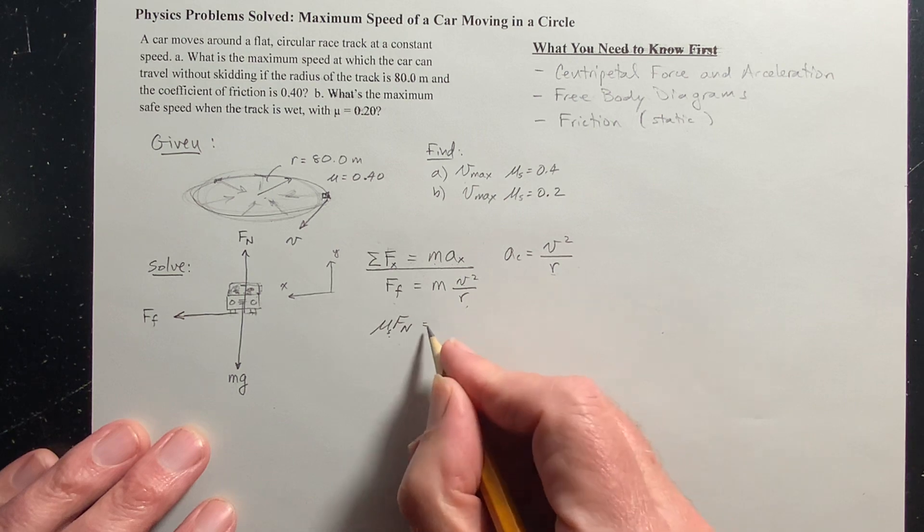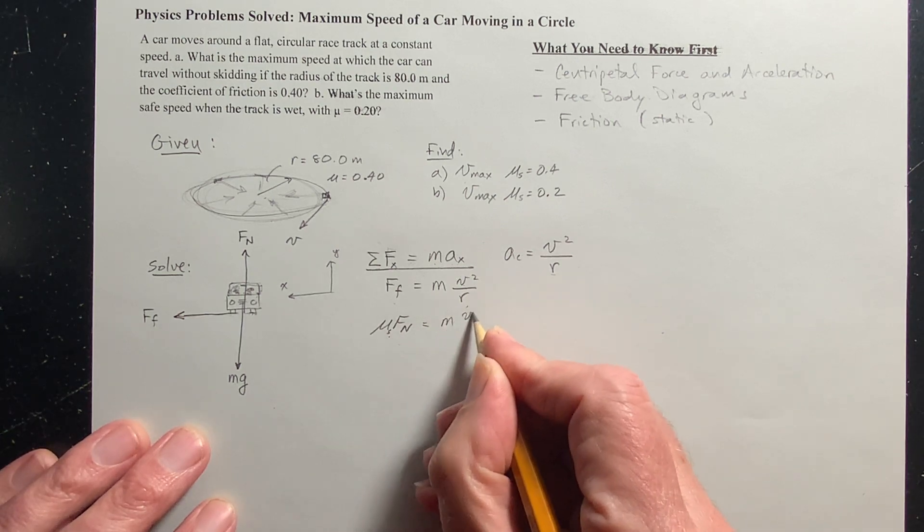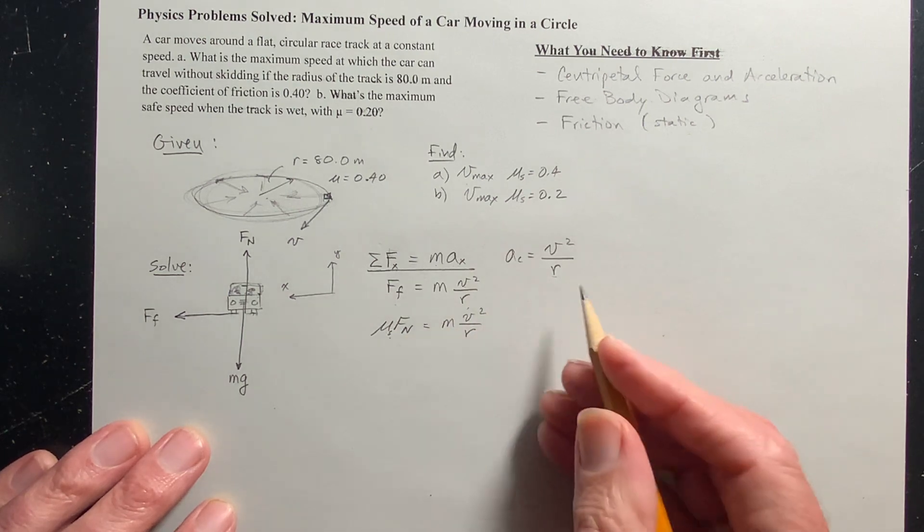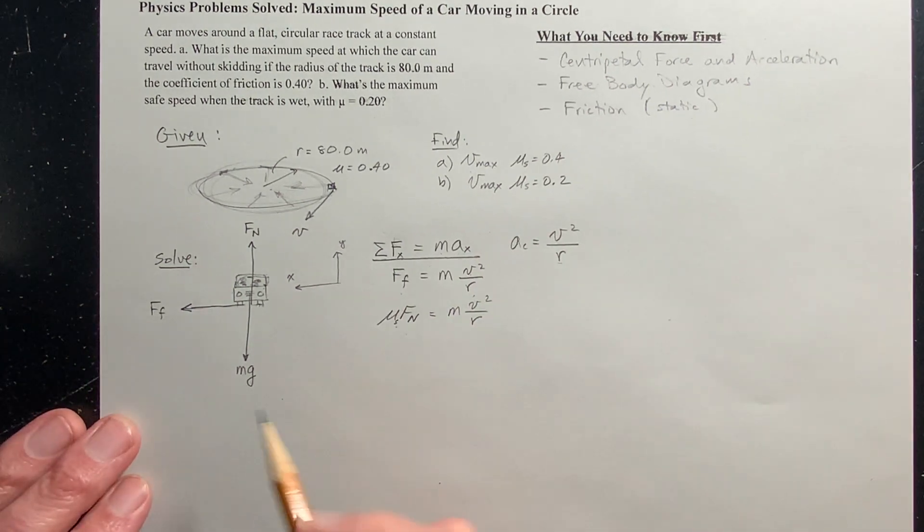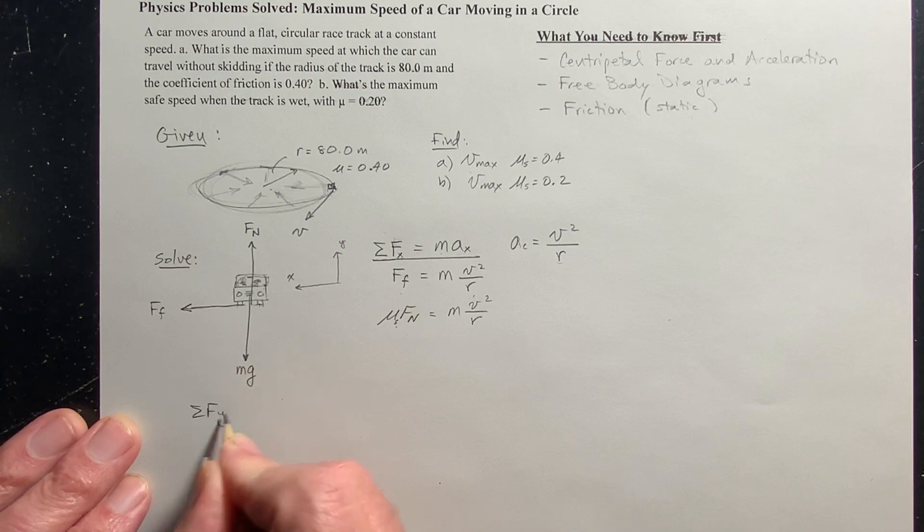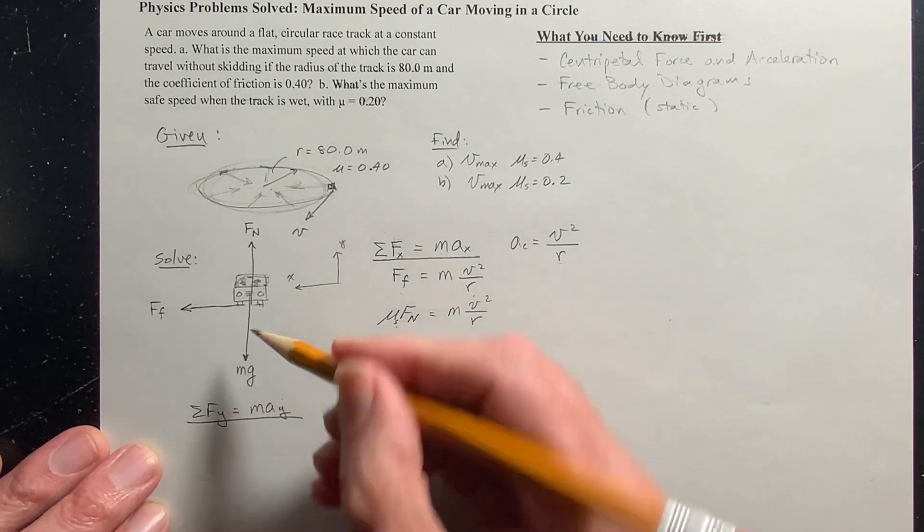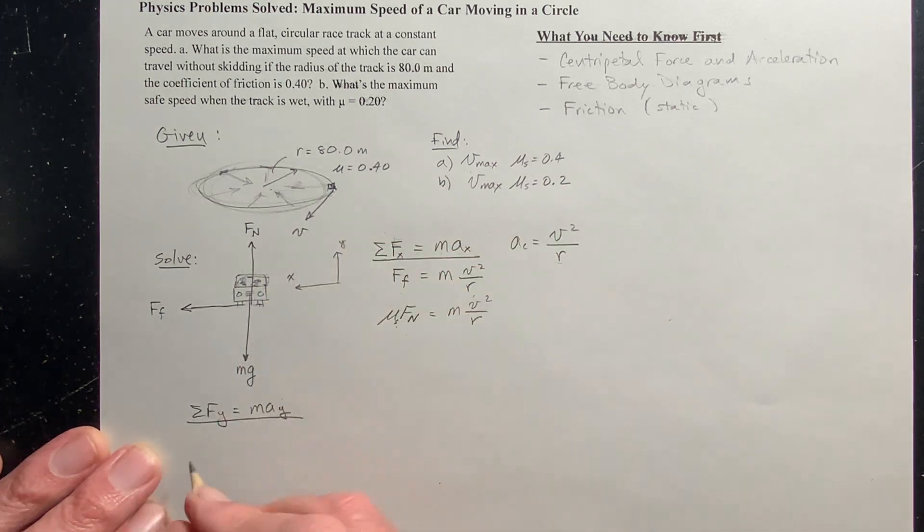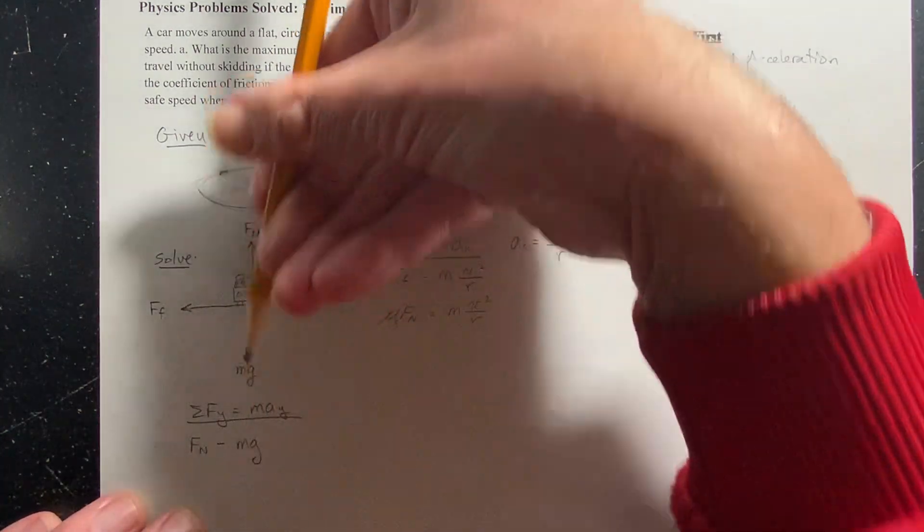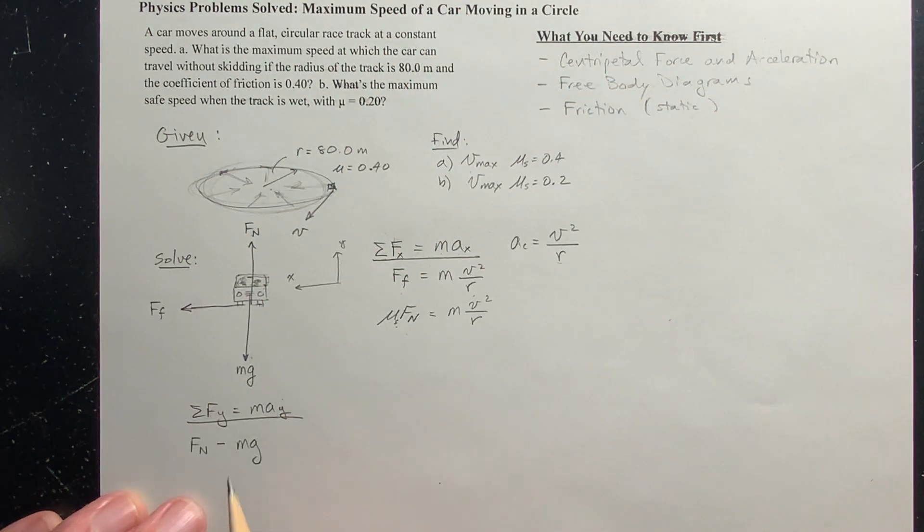Getting back to this, this is mu static times the normal force, and that equals m v squared over r. Just to be super rigorous about this, I'm going to sum the forces in the y direction equals ma in the y direction. When I add the forces in the y direction, I've got the normal force in the positive y direction minus my weight. And the minus is because gravity is straight down. That's in the negative y. This is equal to what? What's the acceleration in the y direction?